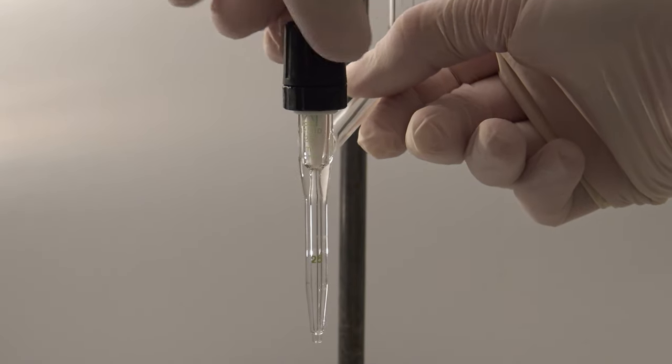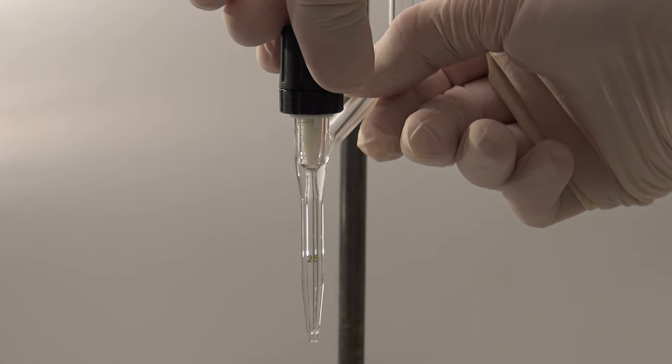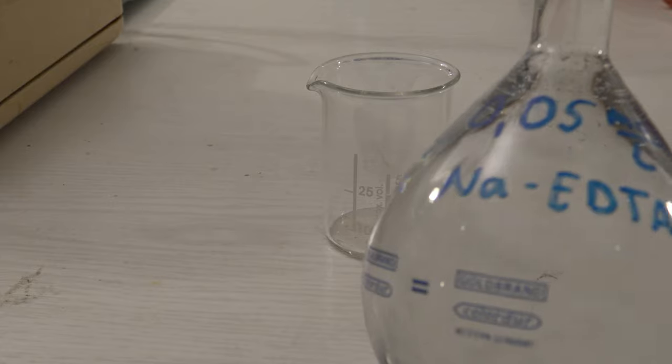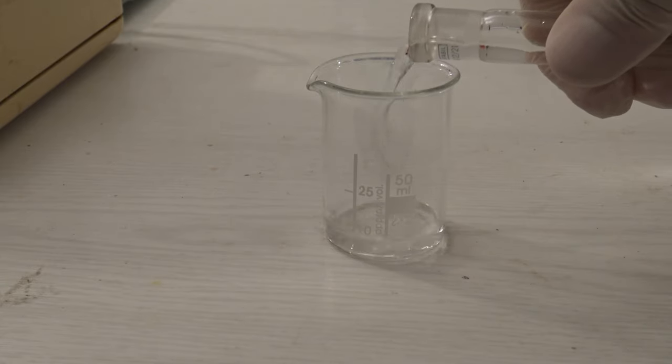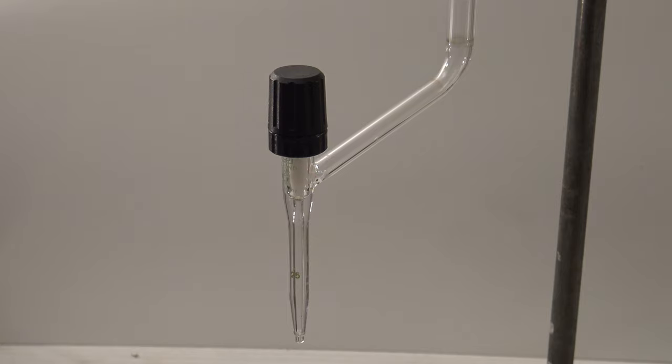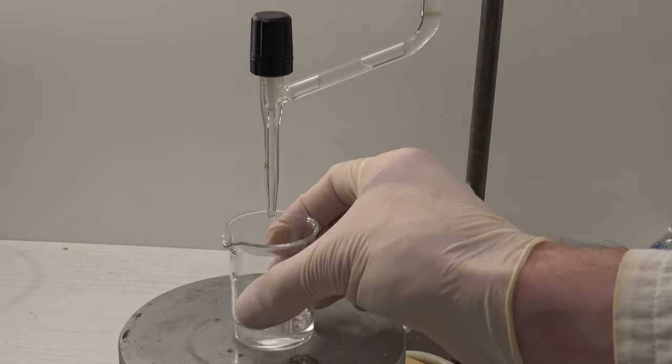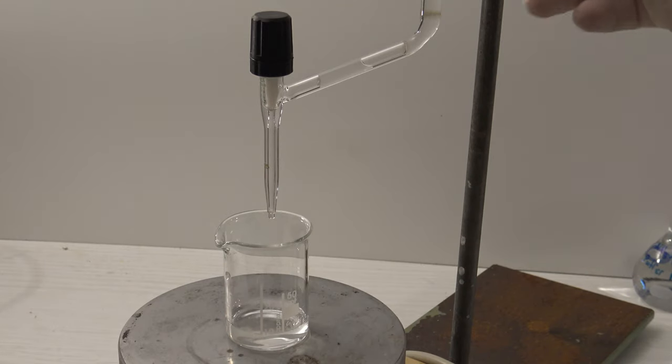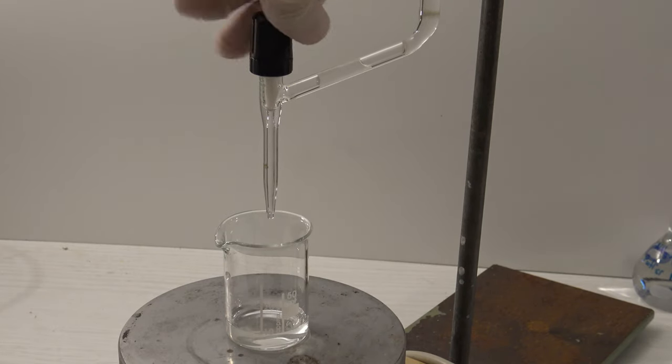Before filling the burette, it has to be made sure that the stopcock is closed. Then it can be filled with the EDTA solution. At first, bubbles of air are trapped inside, which is why the burette is filled above the highest marking. To remove them, the stopcock is opened somewhat quickly and the excess solution is collected.